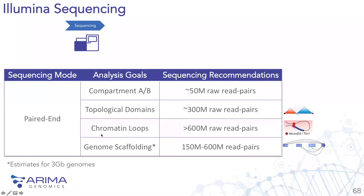For sequencing, all sequencing is in paired-end mode. For defining compartments A and B, you need about 50 million reads or fewer. For defining topological domains — those megabase-size structures — about 300 million read pairs. For high-resolution loop structures useful for defining gene regulatory mechanisms, about 600 million read pairs. For genome scaffolding, it depends on draft assembly quality and genome size, but generally for a three-gigabase genome, around 150 to 600 million read pairs.